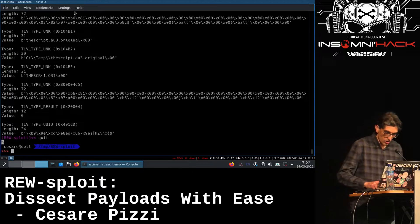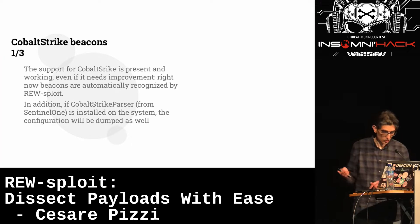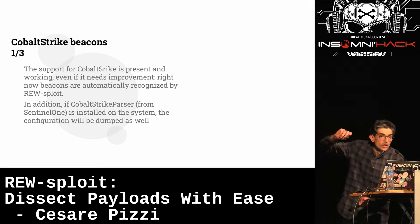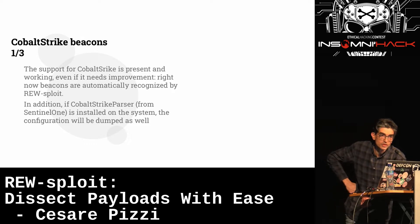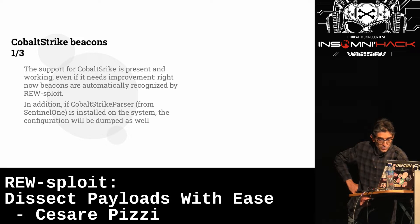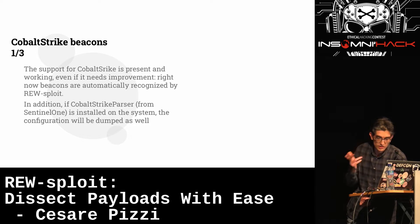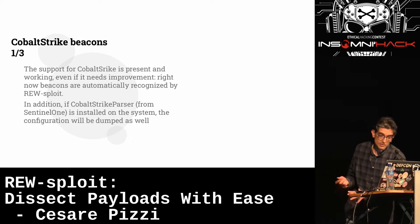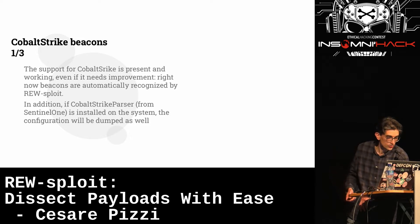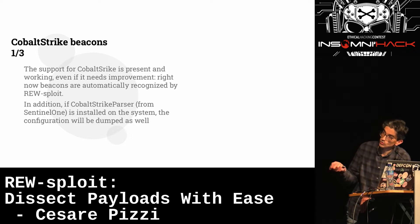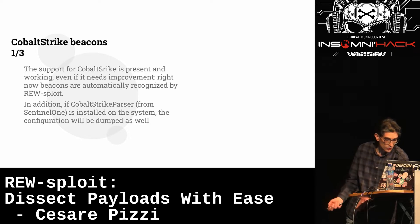Now let's talk about Cobalt Strike, which is becoming more and more common in my real job — so common that we're running into a genetic bottleneck with attacker code. Support for Cobalt Strike is present and working, though it needs improvement because Cobalt Strike is quite a complex beast. RE-sploit can recognize beacons and also decode the configuration if you have the Cobalt Strike parser from Sentinel One installed.